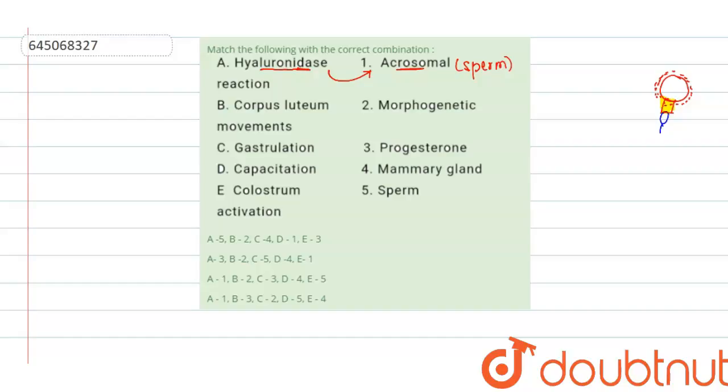This hyaluronidase reaction is responsible for the acrosome to enter this particular egg nucleus or the egg cell. There will be acrosomal reaction taking place only when the hyaluronidase enzyme helps in dissolving this particular jelly layer. So A can be matched to 1. A is matched to 1 is given only in the third and fourth option, and the first and second option can be ruled out.